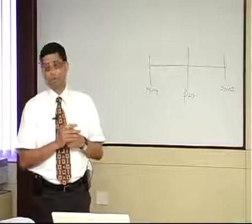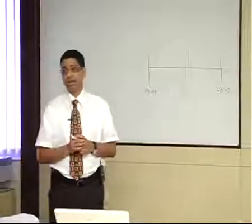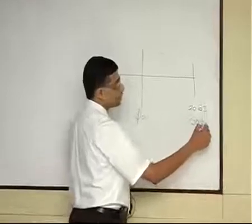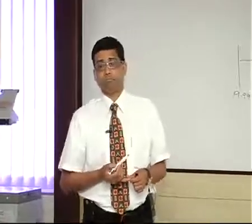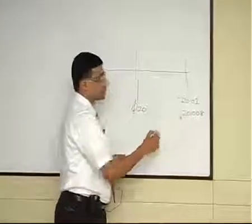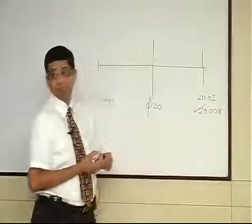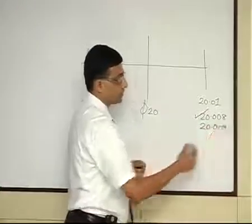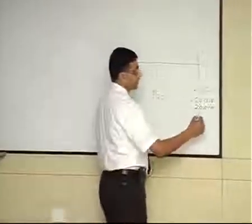So in the incoming inspection, you are measuring these parts. Let us say the first part you get it as 20.008. Will you accept it or reject it? You accept this because this is within your tolerance. Next, let us say you get 20.009. You accept it. The next part, let us say you get 20.01.